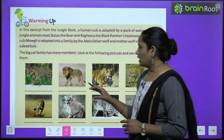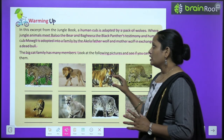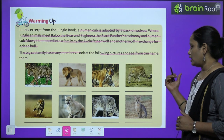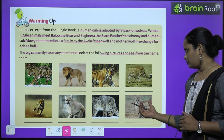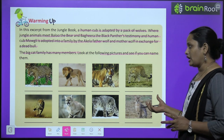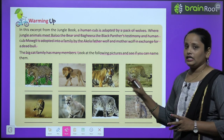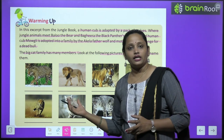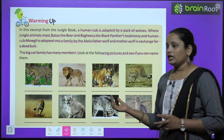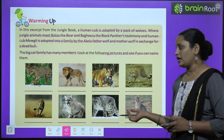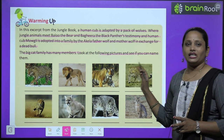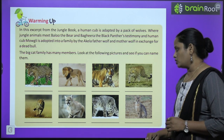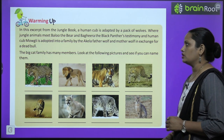Aap dekh sakte ho yeh different different types of — aap keh sakte ho — lion, tiger, cheetah, panther. So what you have to do, you have to name them. This is your homework children, do it yourself.